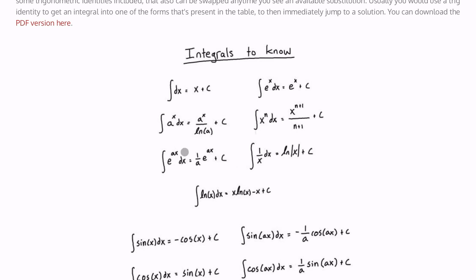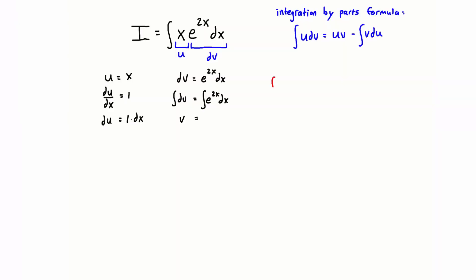So in our case, we have e to the 2x dx, so this is going to apply to us. So let's bring that into our problem. So in general, that was the integral of e to the ax dx is equal to 1 over a, e to the ax plus c.